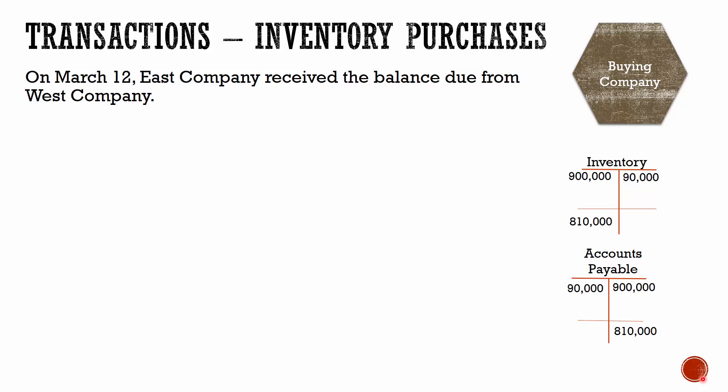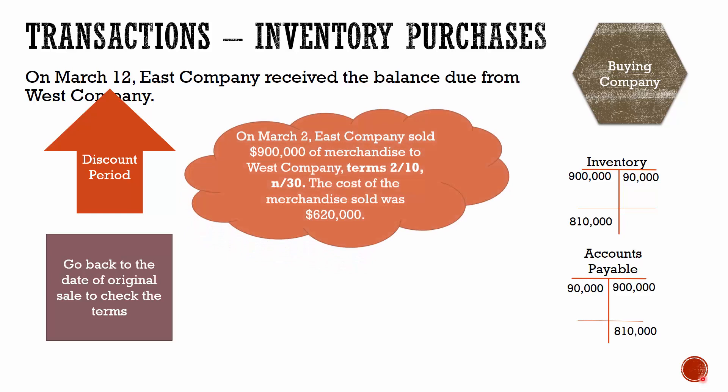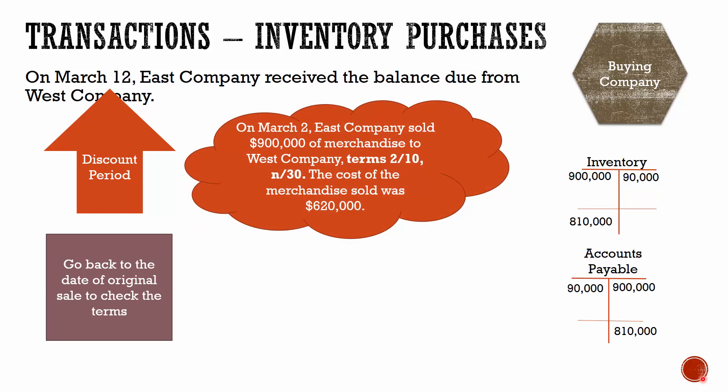On March 12th, East Company received the balance due from West Company. The first thing we need to do is check whether or not we are within the discount period. We need to go back and look at our original journal entry from March 2nd, when the items were purchased. Our terms are 2/10, net 30 — meaning if we pay within 10 days, we get a 2% discount; otherwise, the net amount is due in 30 days. March 2nd to March 12th counts as 10 days, so yes, we are within the discount period.